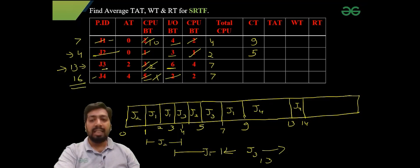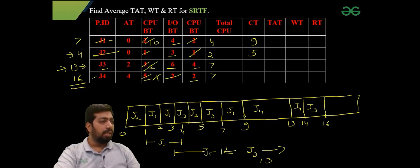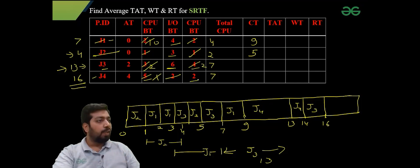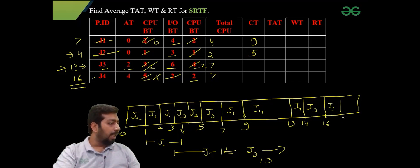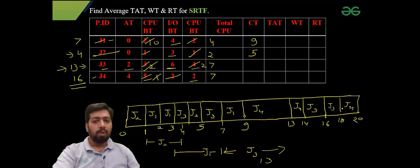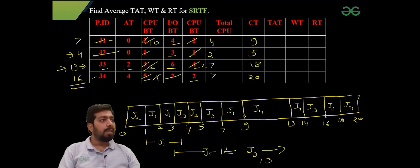At time 14, only J3 is in the ready queue with remaining burst of 4, so J3 gets the CPU. At time 16, J4 returns from the blocked state needing 2 CPU units, and J3 also has 2 remaining units — it's a tie. Since J3 arrived in the ready queue first, J3 continues and completes at time 18. Then J4 gets the CPU and completes at time 20. So J4 completion time is 20 and J3 completion time is 18.